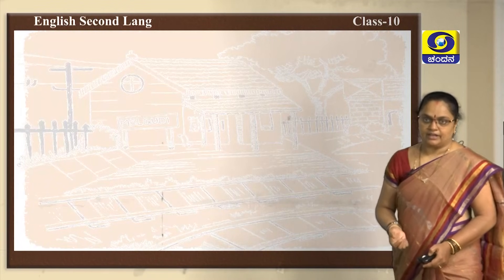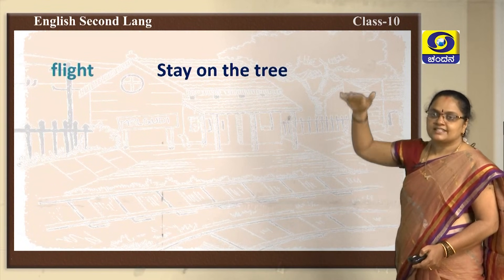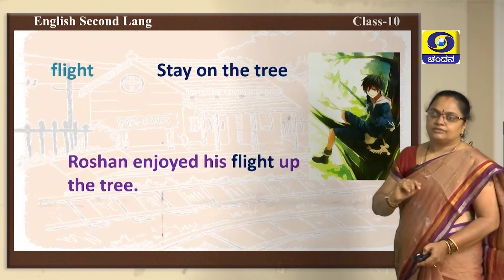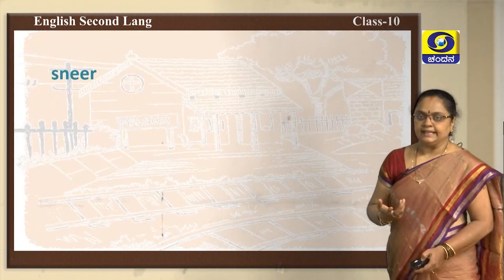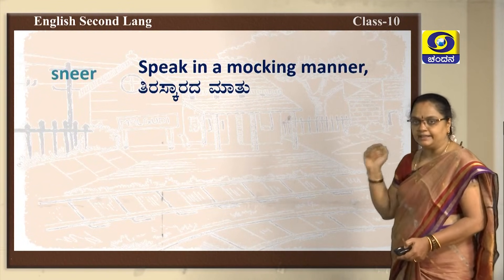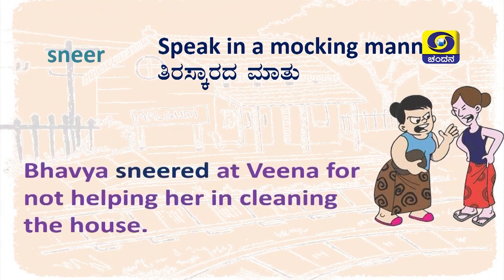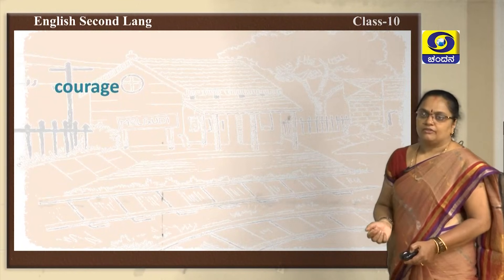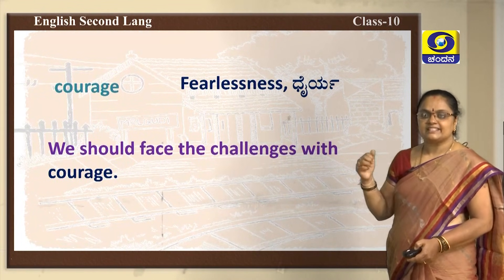The next word is 'flight' — flight up the tree means staying on the tree or staying up in the air. We can use it in a sentence like: Roshan enjoyed his flight up the tree. Another word is 'sneer' — sneer means speak in a mocking manner. For example: Bhavya sneered at Veena for not helping her in cleaning the house. Next word is 'courage' — courage means act of fearlessness. We can use this as: we should face the challenges with courage.